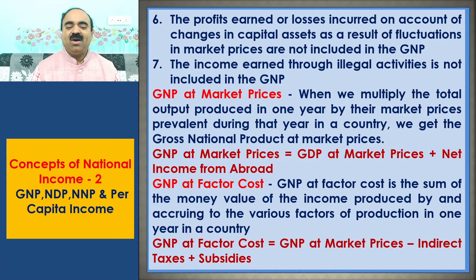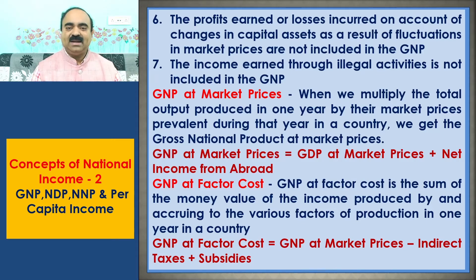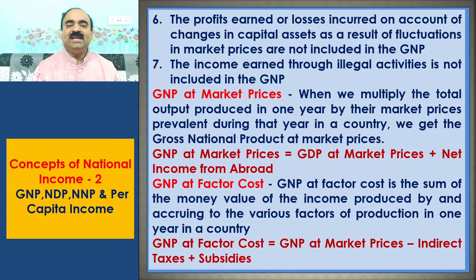GNP at factor cost is the sum of the money value of the income produced by and accruing to the various factors of production in one year in a country. Therefore, GNP at factor cost is equal to GNP at market prices minus indirect taxes plus subsidies.